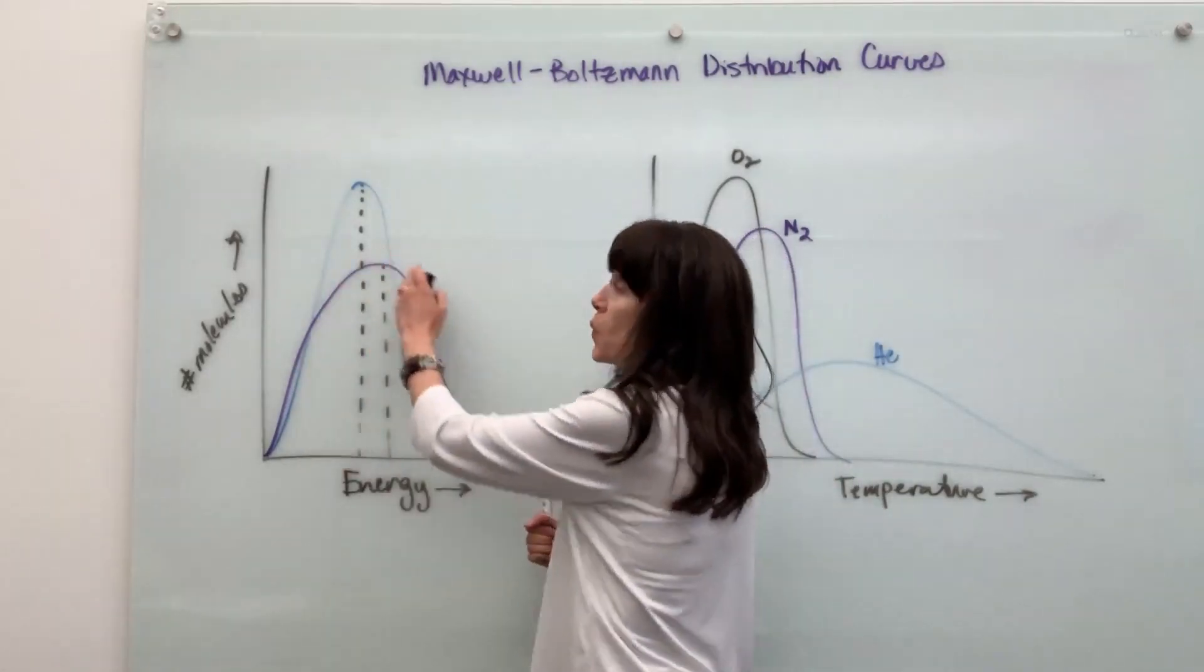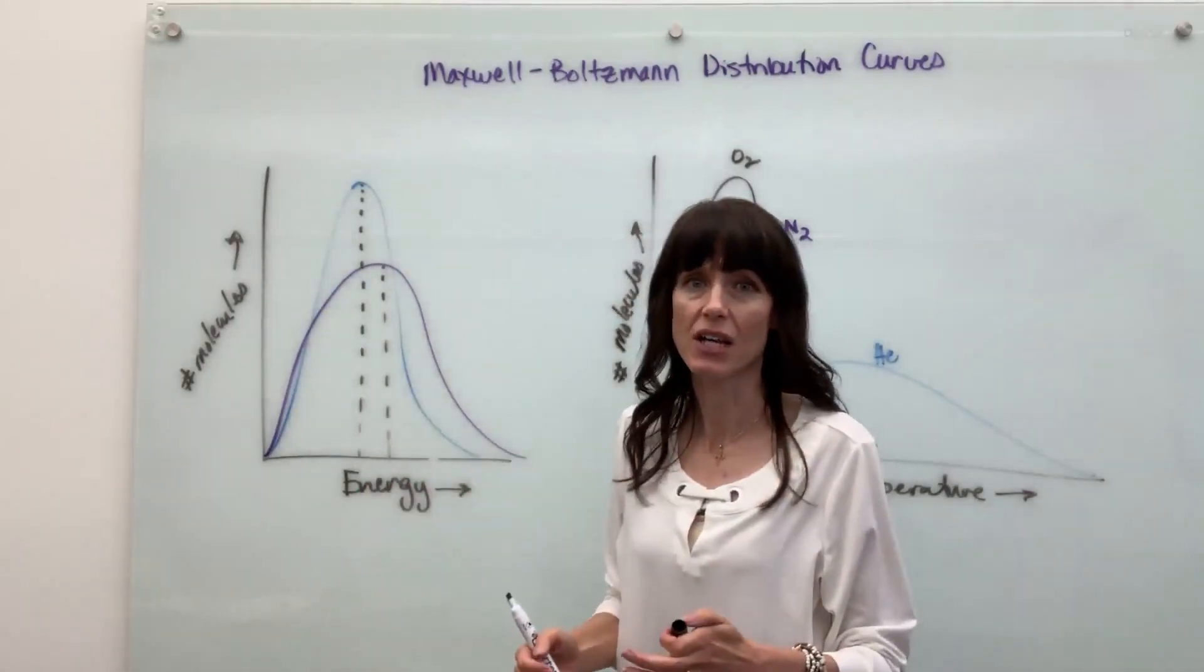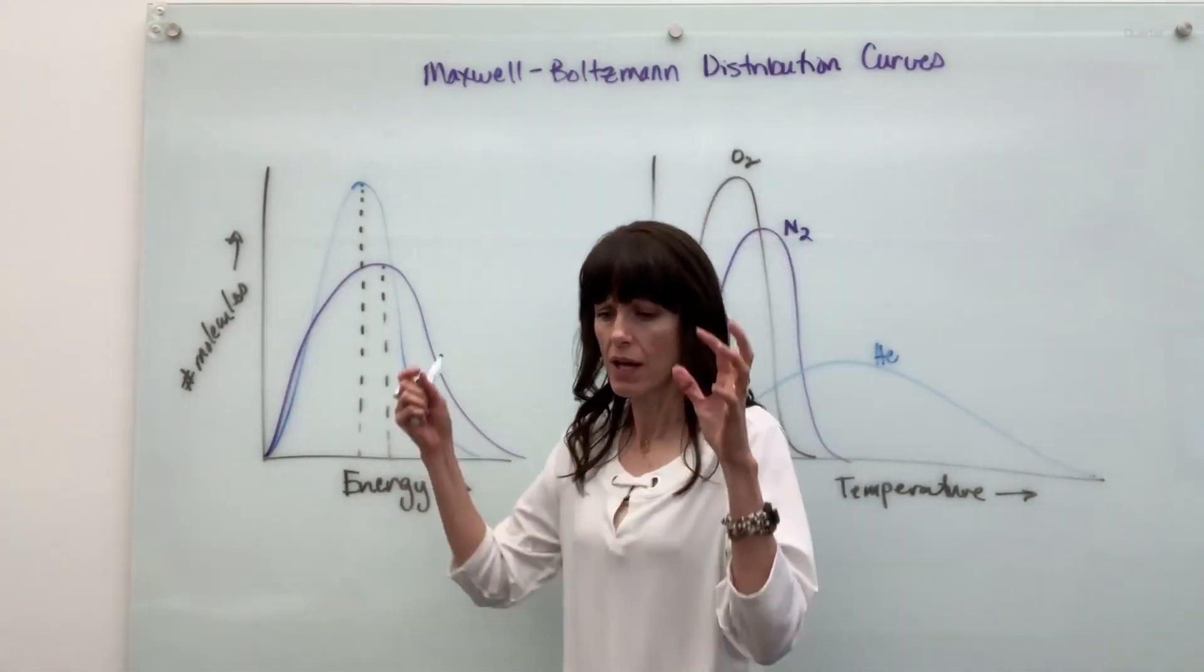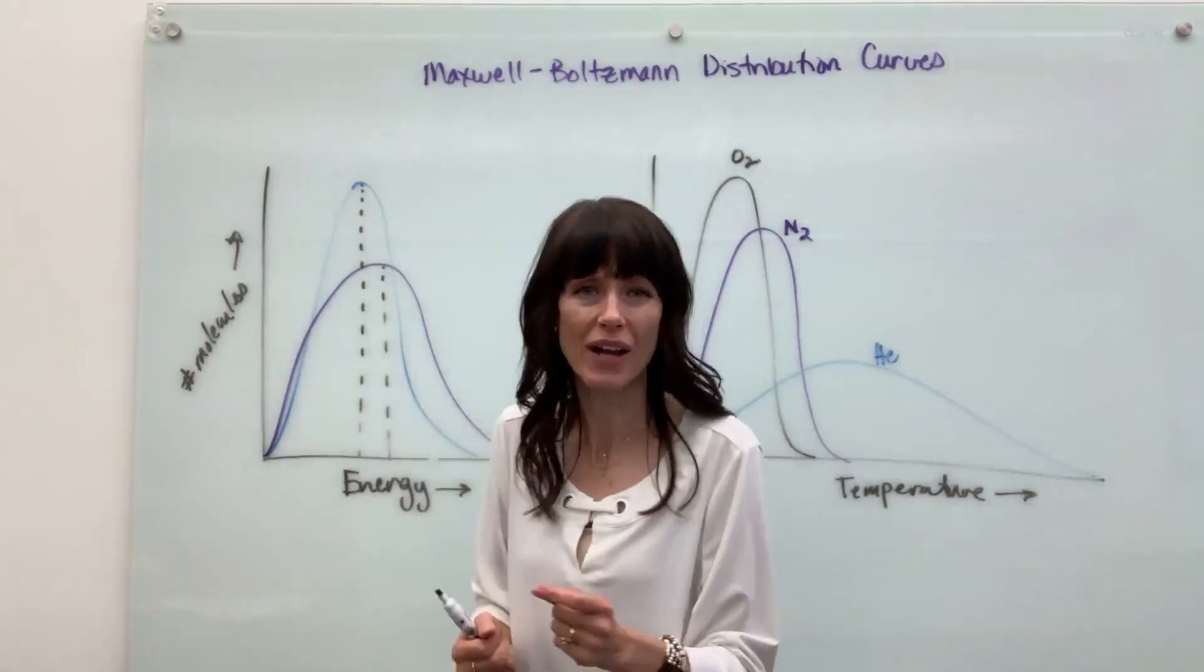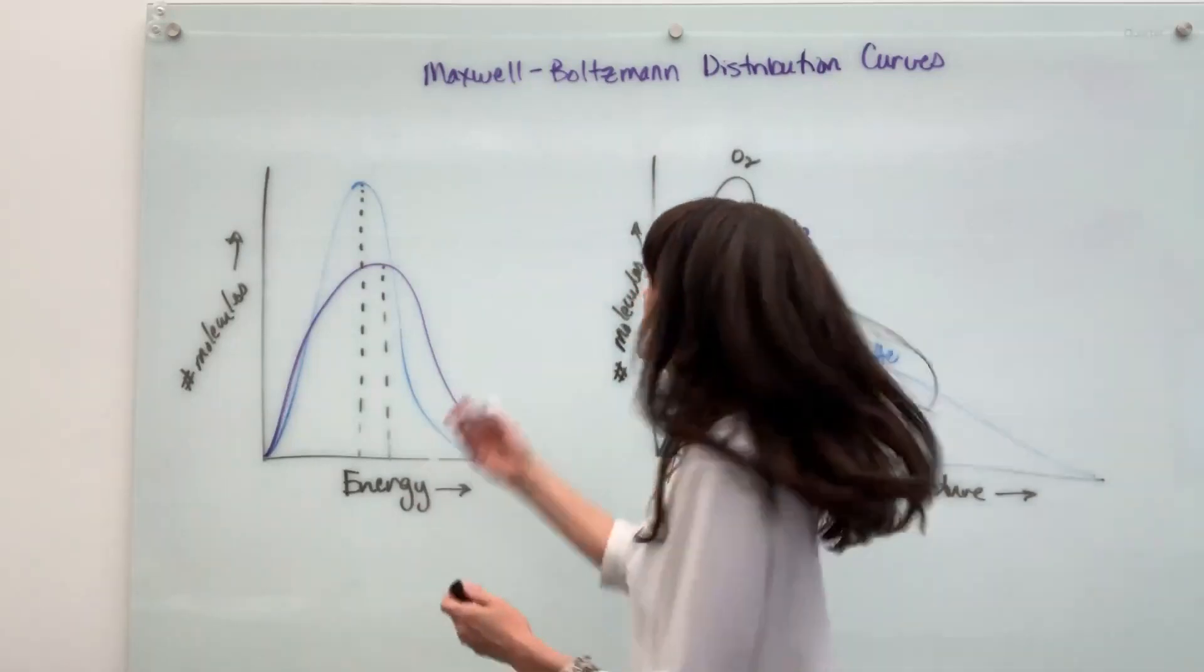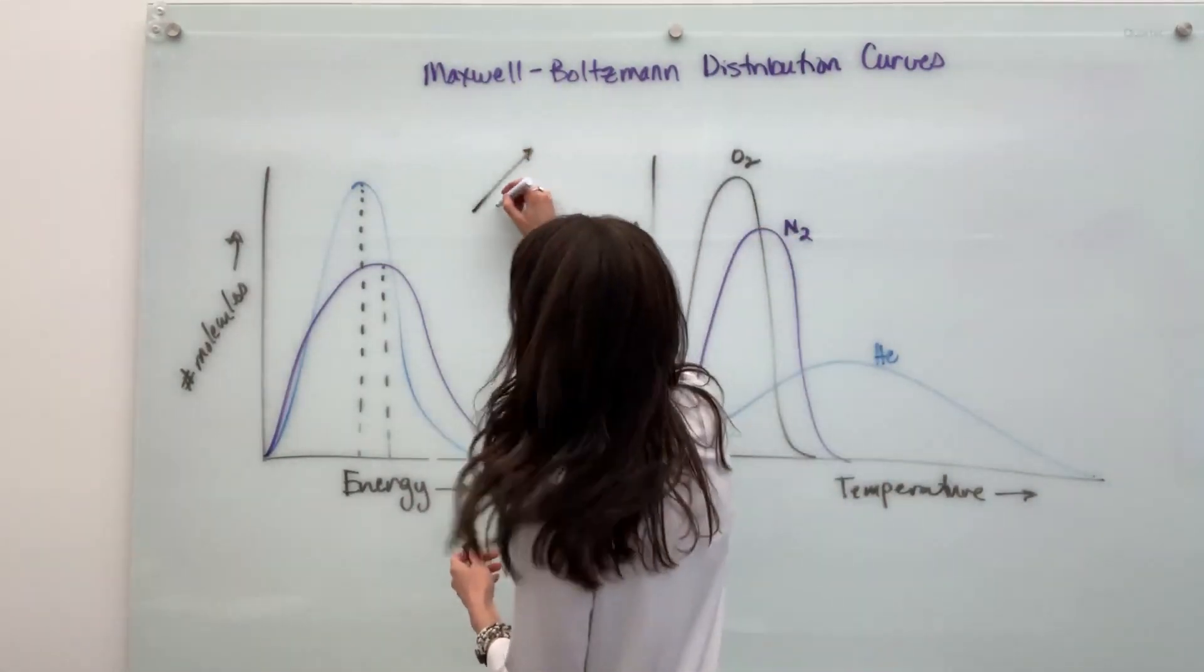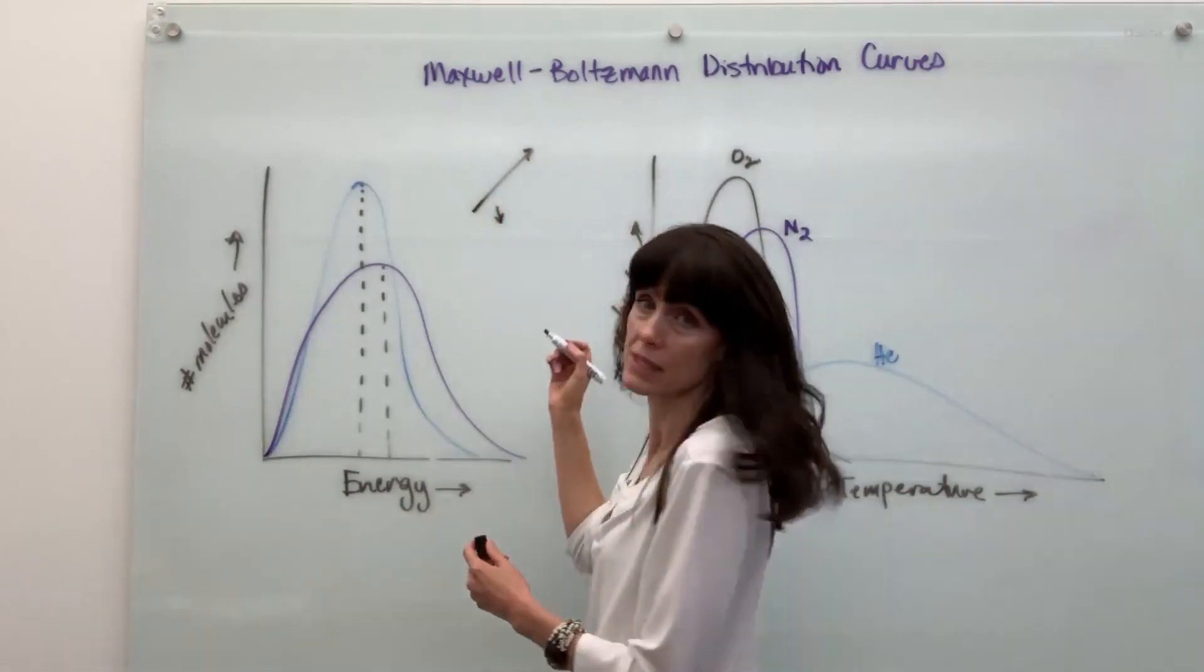So this lower curve actually has a higher average energy. And here's the reason why. When you have all these atoms, they don't all have the same identical energy. If I were to draw them as vectors moving, some would move really fast, and some would move really slow.